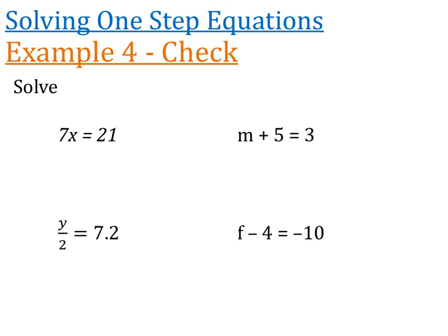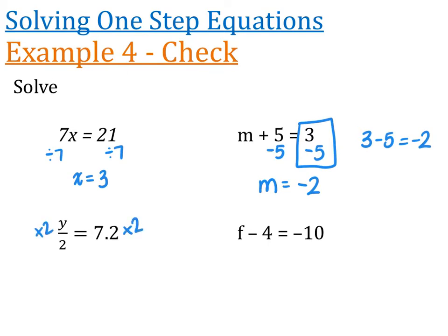The first example, or the first equation, is 7x is equal to 21. So we're going to divide both sides by 7, and x is equal to 3. For the next question, you're going to subtract 5 from both sides. So m is equal to minus 2. You need to do this subtraction in the order that it is. 3 take away 5 is minus 2. For this next question, you're going to multiply both sides by 2. It's absolutely fine if your answer is a decimal. 7.2 times 2 is 14.4. And then we're going to add 4 to both sides. Again, you have to do the adding and subtracting in the order that it is. So negative 10 plus 4 gives us minus 6. f is equal to minus 6.